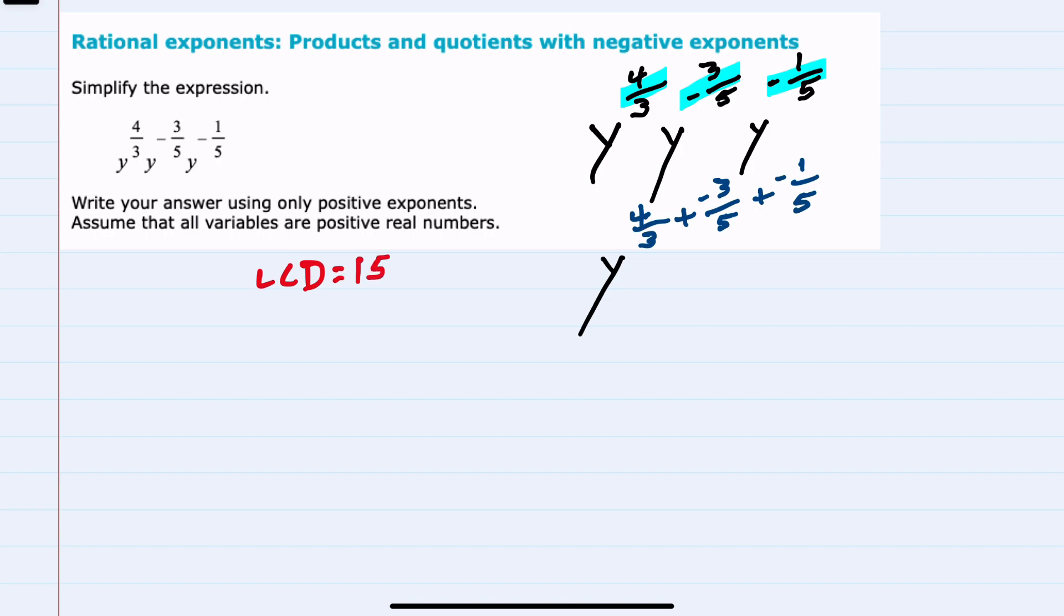So our first fraction will need to multiply the 3 by a 5, doing the same in the numerator. The second, we would need to multiply by a 3, doing the same in the numerator. And the last one also needs to be multiplied by a 3, doing the same in the numerator.